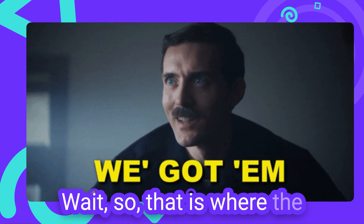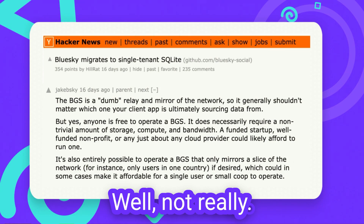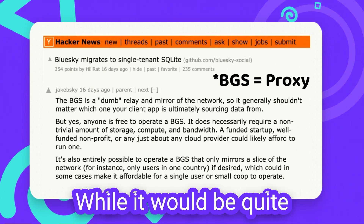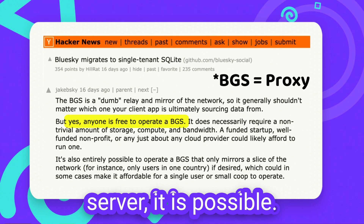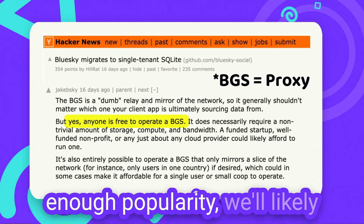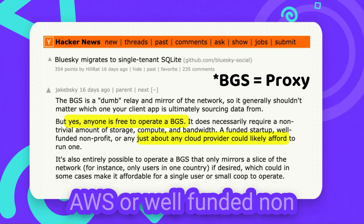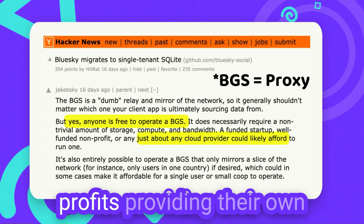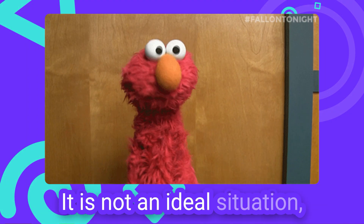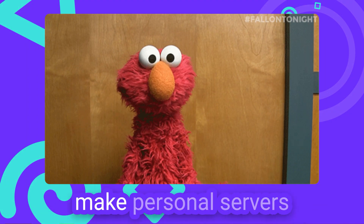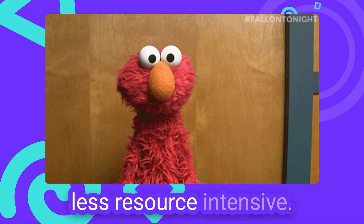So is that where the decentralization ends? Well, not really. While it would be quite a financial investment to run your own proxy server, it is possible. If the AT protocol gains enough popularity, we'll likely see big players like Cloudflare, AWS, or well-funded nonprofits providing their own proxy services to users. It is not an ideal situation, but it is a trade-off to make personal servers much more accessible and less resource intensive.